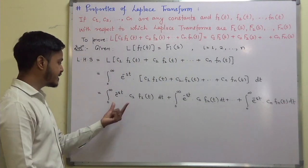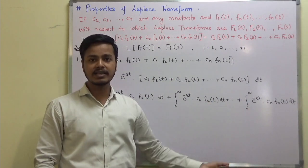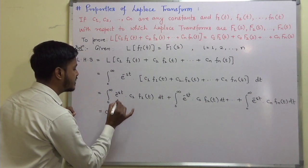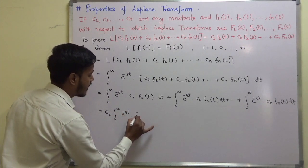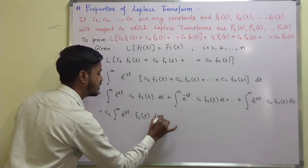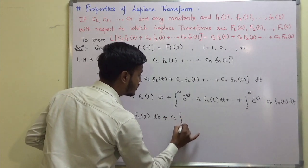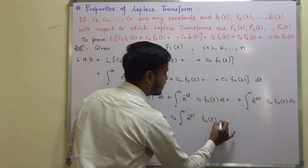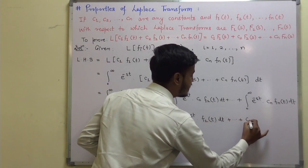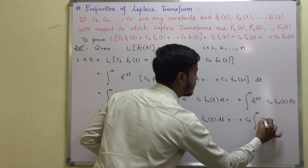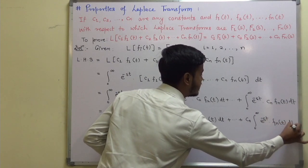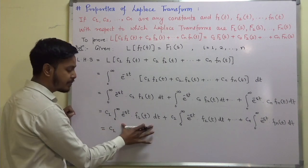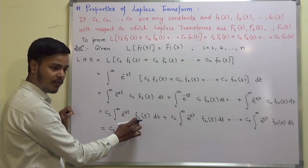Now, c1, c2, ..., cn are constants, so we can take them outside the integrals. This gives us c1 times the integral from 0 to infinity of e^(−st)·f1(t) dt, plus c2 times the corresponding integral for f2(t), and so on up to cn times the integral from 0 to infinity of e^(−st)·fn(t) dt.